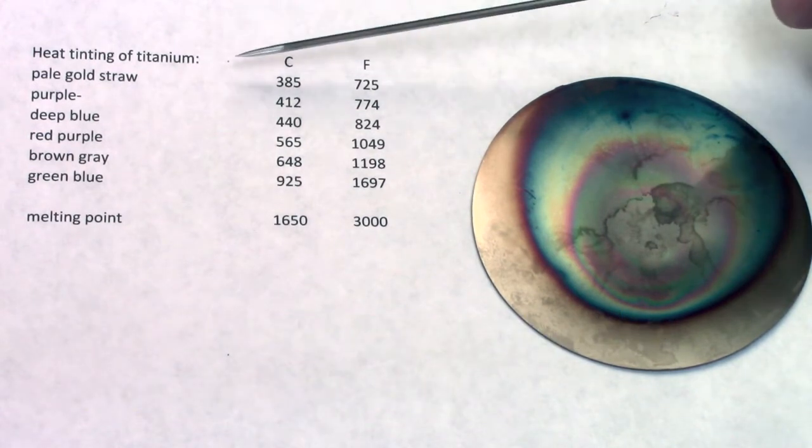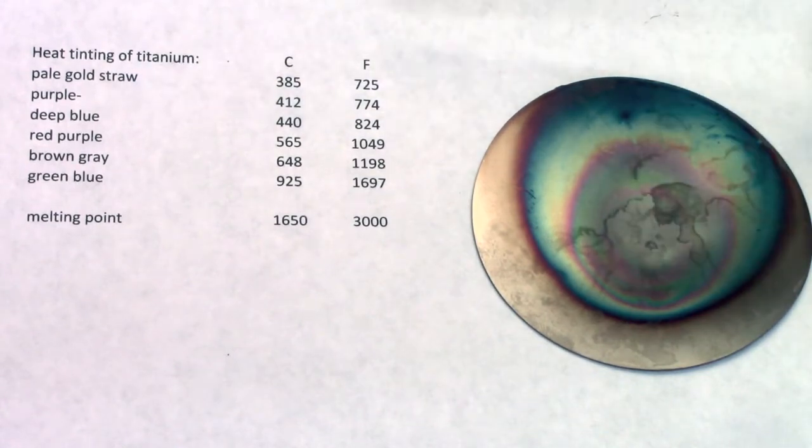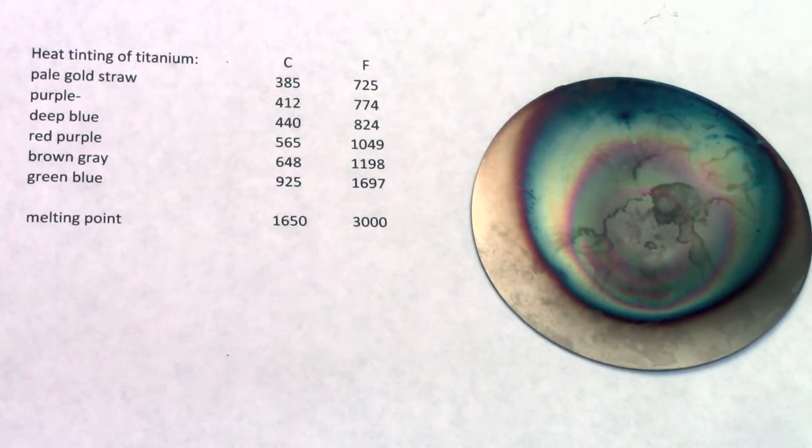So if you look here it says pale gold straw means the titanium got up to 700 degrees. So let's zoom in on this disc and we'll look at it in more detail.